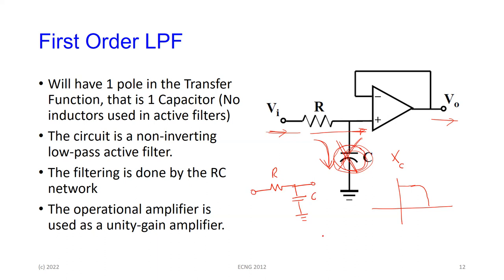The simple RC network by itself is in fact a first-order passive low pass filter. We'll see why it's called first-order in a second.